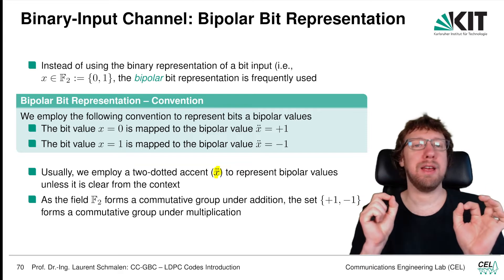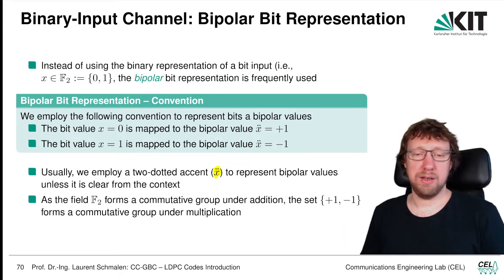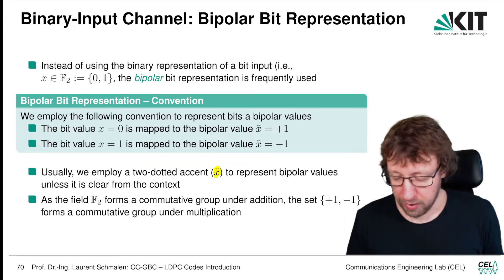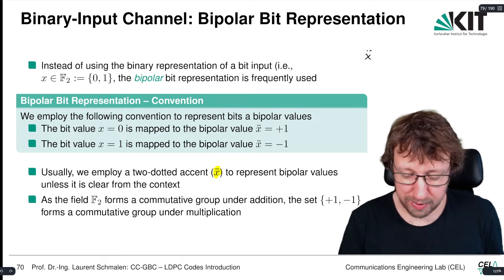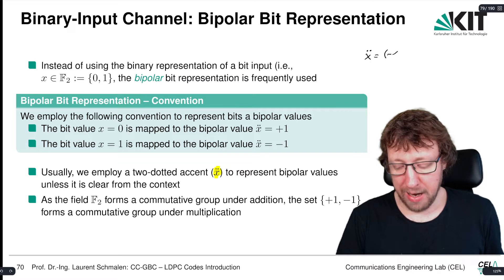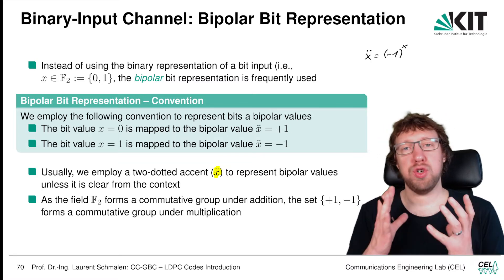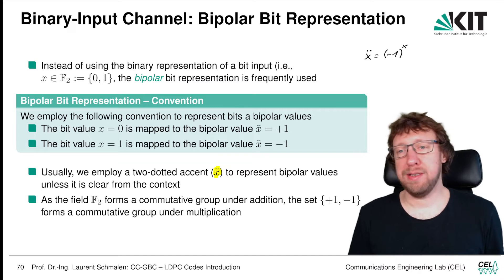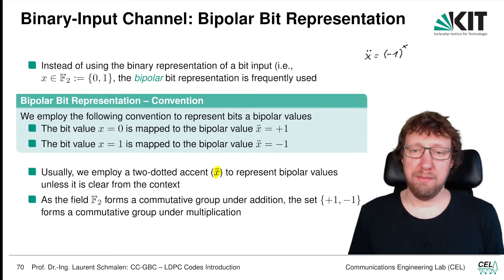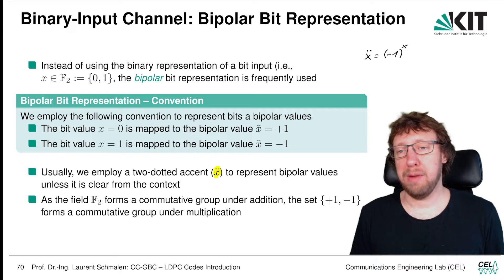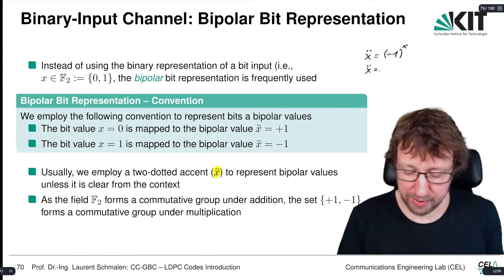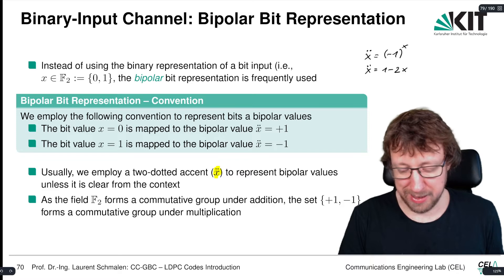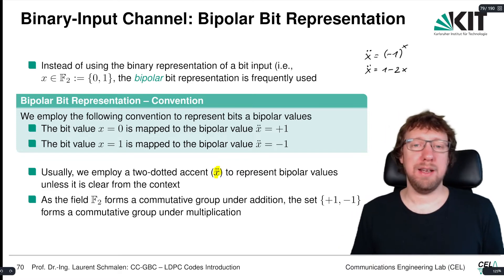We use the notation x-double-dot to denote the bipolar value — these two dots resemble BPSK symbols, which is why we use it. We can represent the values as follows: x-double-dot is equal to minus 1 to the power x. That's a very shorthand notation — if x equals 0, x-double-dot is plus 1; if x equals 1, x-double-dot is minus 1. Alternatively, x-double-dot is equal to 1 minus 2 times x.